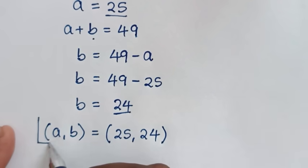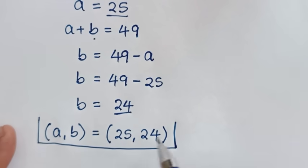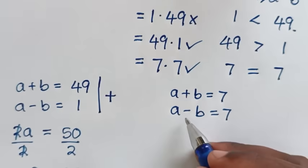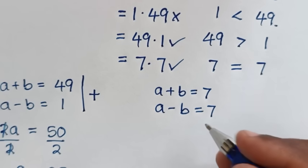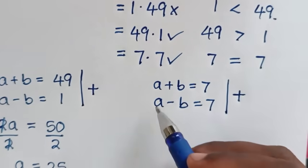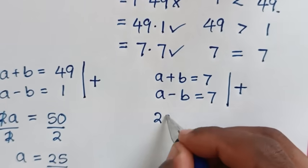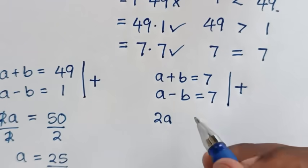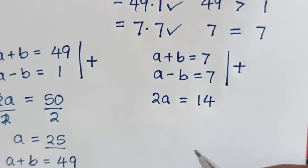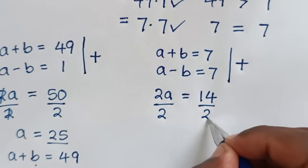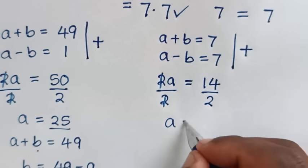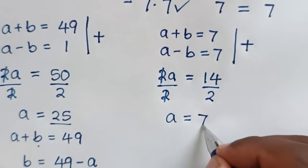So the first solution is a comma b equals 25 comma 24. Now to solve from the second solution, we add the two simultaneous equations by elimination method. So a plus a is 2a, and b plus negative b is 0, equals 7 plus 7 which is 14.